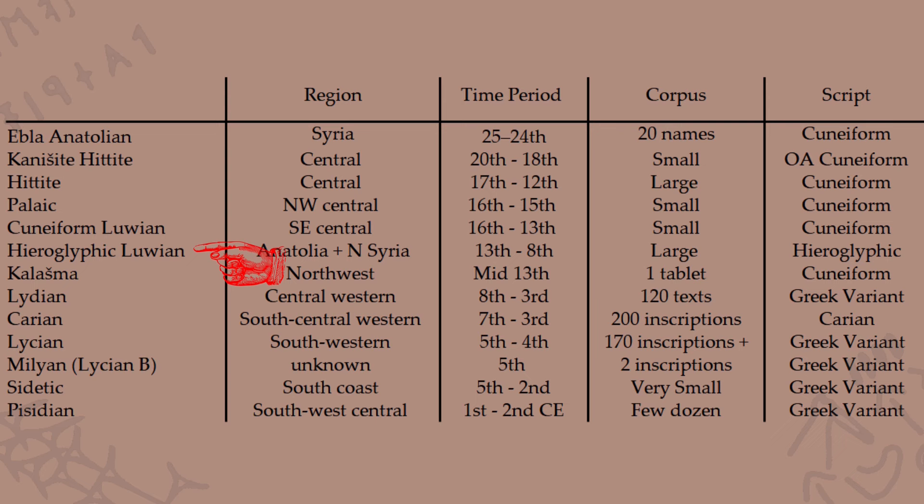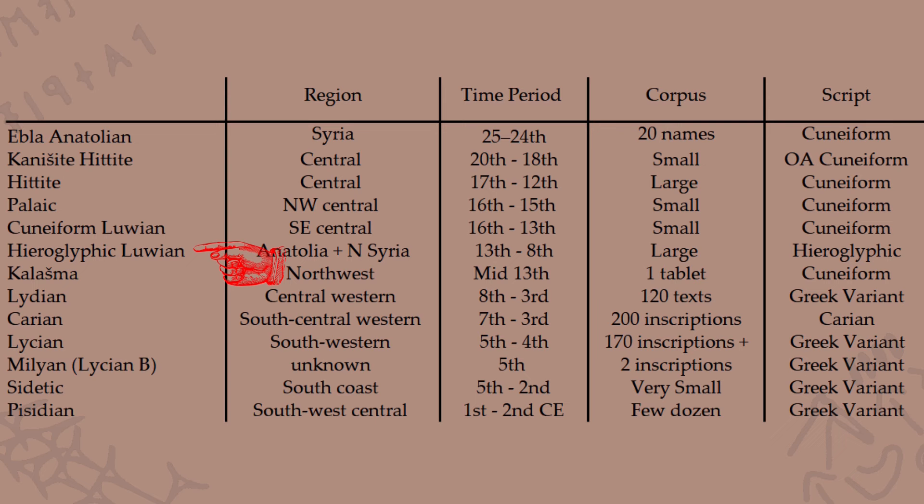Outside of Hittite and Hieroglyphic Luvian, two key Anatolian languages in my opinion are Palaic, from northwest central Anatolia. Despite its relatively small corpus, it shows several interesting features that aren't actually present in Luvian. The Luvian branch is quite a substantial branch of the Anatolian language family, so Palaic is an interesting contrast. I also think Lydian is quite an important Anatolian variant in terms of understanding the family as a whole, particularly because a lot of its vocabulary is very difficult to compare to lexical terms from other Anatolian languages.